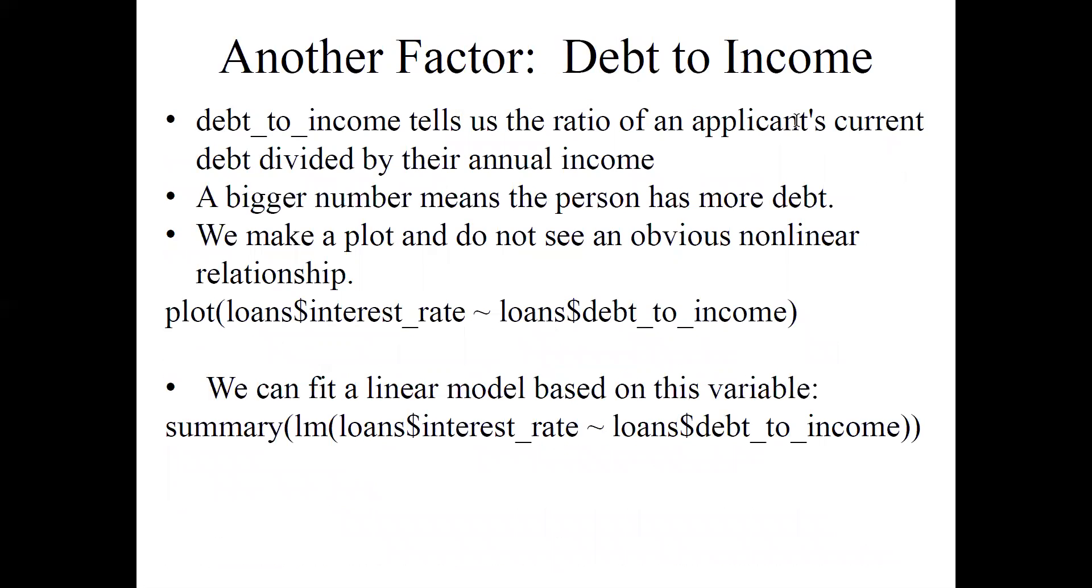Let's look at another factor. We have 55 columns to play with. Another one is how indebted the applicant is already, commonly measured with the debt-to-income ratio. You take the amount of debt the person already has divided by their annual income. A bigger number means the person has more debt. We make a plot. We do not see an obvious nonlinear relationship, so we can fit a linear model based on this variable.